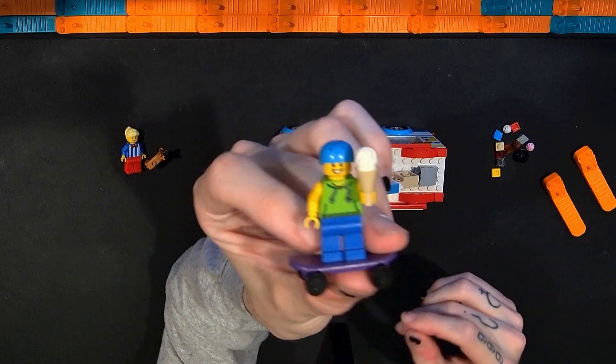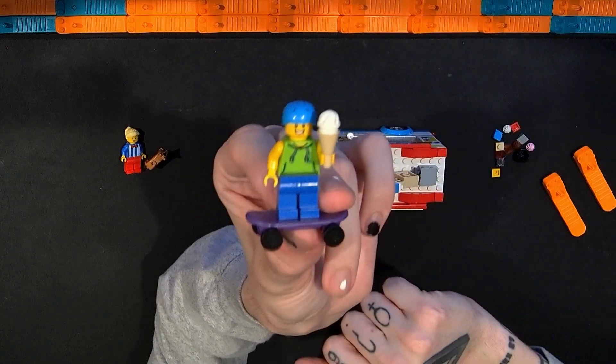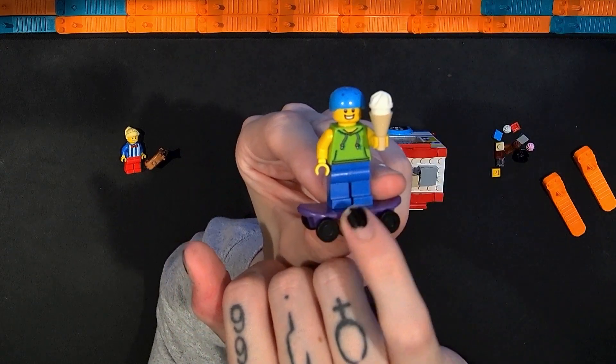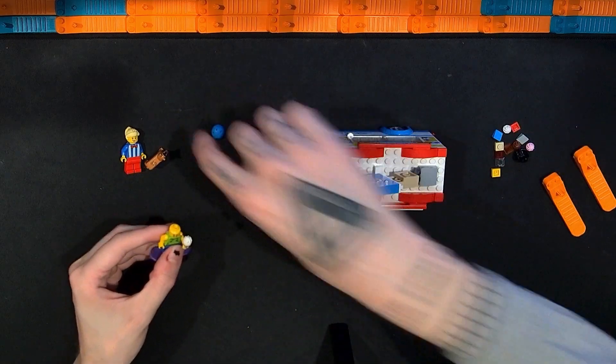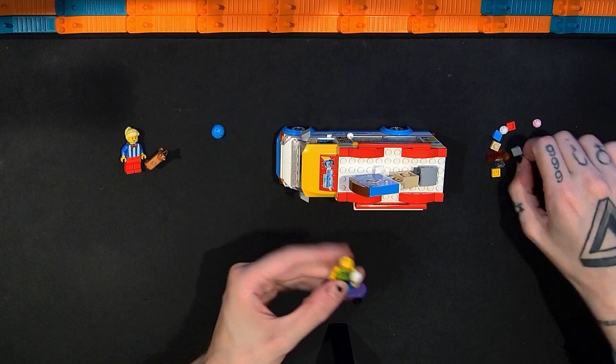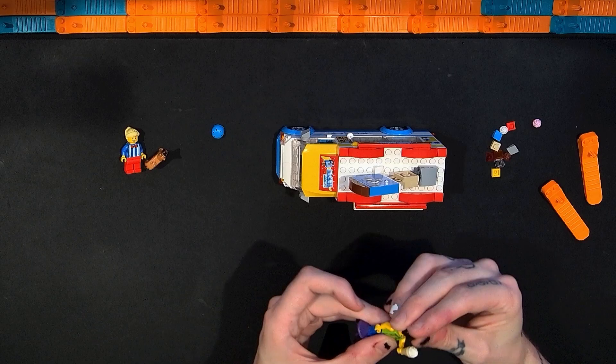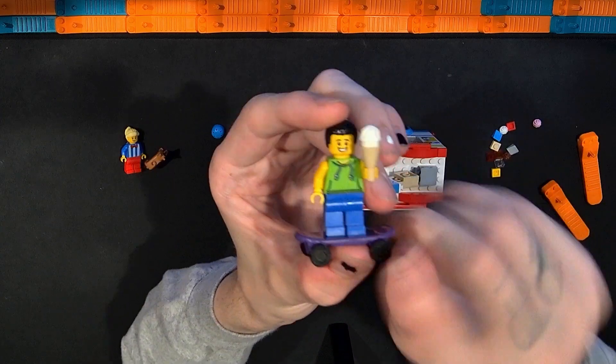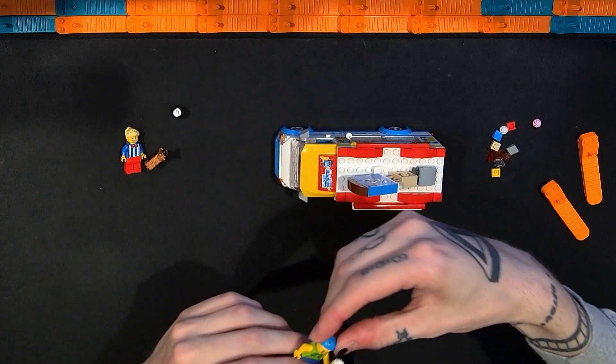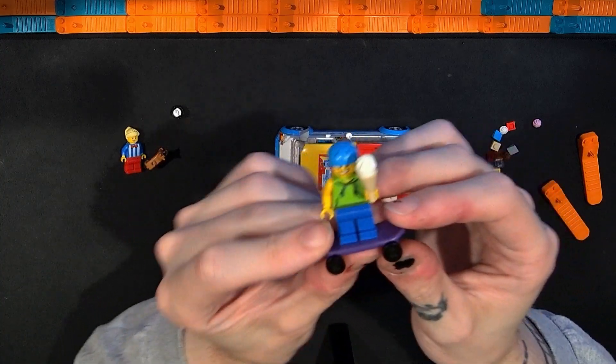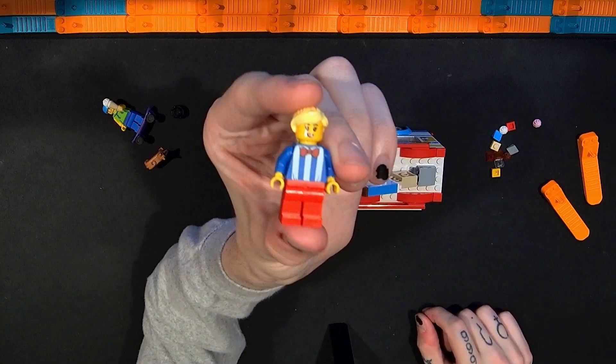We do get some minifigures here so I will show those. The first one we get here is riding a skateboard. They do have the helmet. They are holding an ice cream cone right now. No printing on the midsection of the legs, kind of like a sweatshirt here or a hoodie on the back there. Just a normal face printing. They do get an extra hair piece for this character so that is nice to get that.